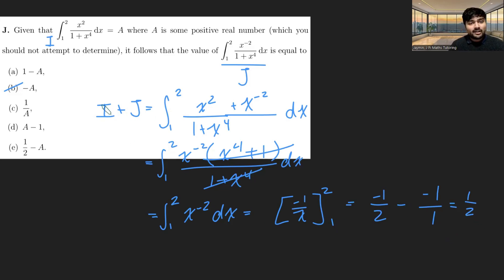So i plus j equals 1 half, and i we actually know is a. So rearranging this, we get j equals 1 half minus a, and so the answer here is e.